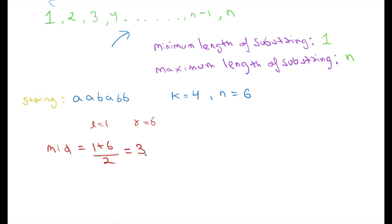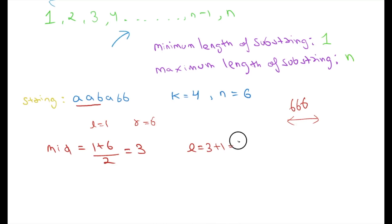Now we will check: is it possible to make any sub-string of length 3 consist of the same character? We start from the first sub-string of length 3. Here the frequency of a is 2 and b is 1, so we can change any character since k is 4. If we change the a's into b, the sub-string becomes bbb, so 3 can be the possible beauty. Now l becomes 4, r stays 6, and our current answer is 3.